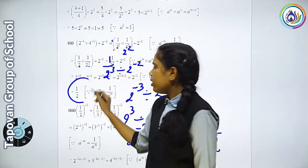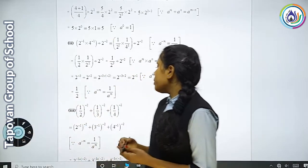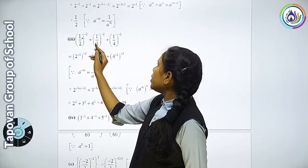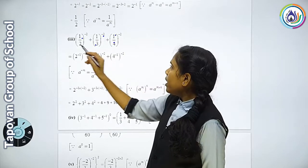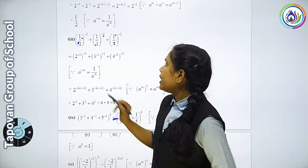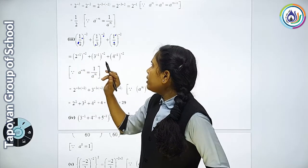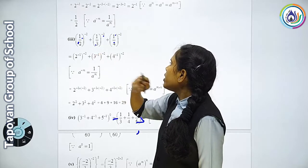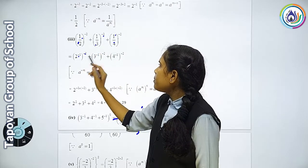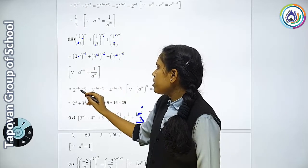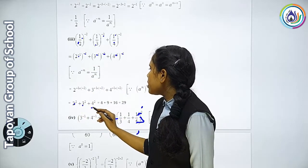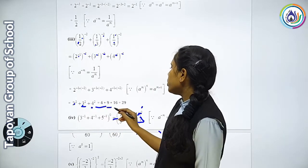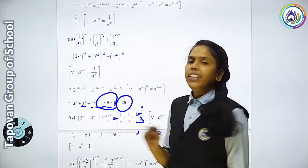Question number 3: 1 upon 2 raise to minus 2 plus 1 upon 3 raise to minus 2 plus 1 upon 4 raise to minus 2. To yahan in sabhi numbers ko reciprocal karte hain plus karne ke liye. To 2 raise to 2, 3 raise to 2, aur 4 raise to 2 — sabhi ka minus minus, to plus ho jayega. Then 2 ka square, 3 ka square and 4 ka square. 2 ka square hota hai 4, 3 ka square hota hai 9 and 4 ka square hota hai 16. Sabhi ka plus karo — kitna answer aaya? 29.